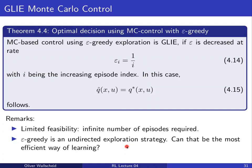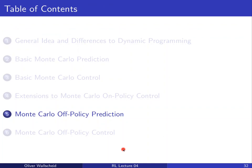Epsilon-greedy is a completely undirected exploration strategy — we simply take random non-greedy actions. The question of whether this is the most efficient learning approach remains open and will be discussed further in the course. With that, we leave behind single-policy prediction and control and move to off-policy solutions, first for prediction then for control.